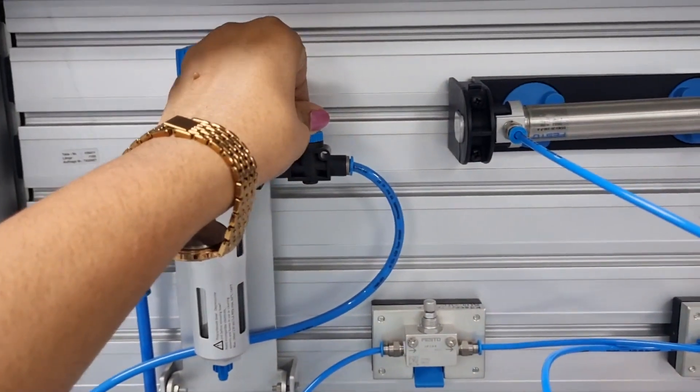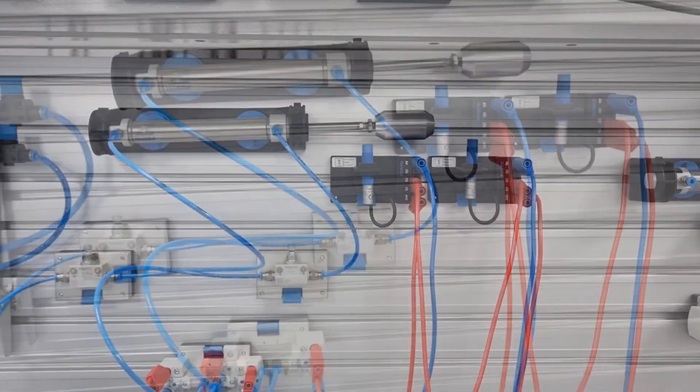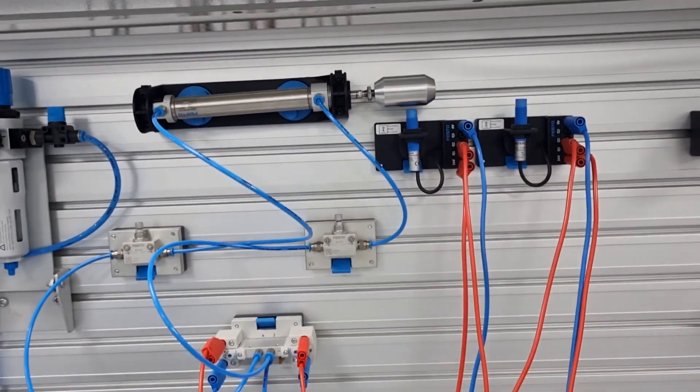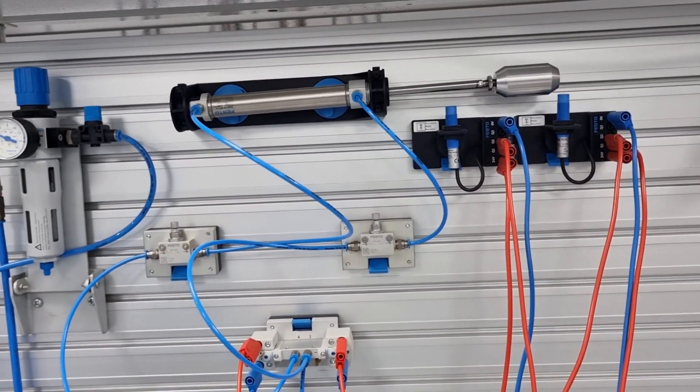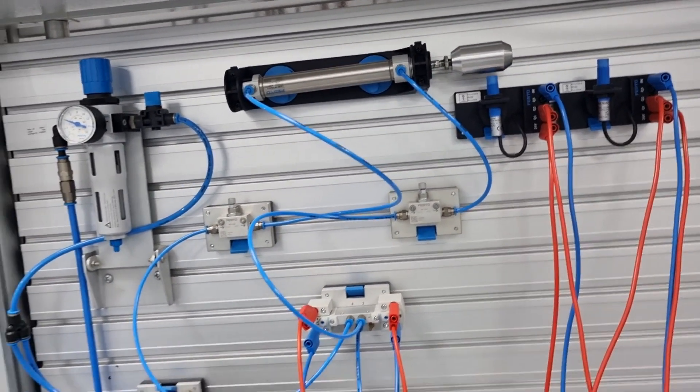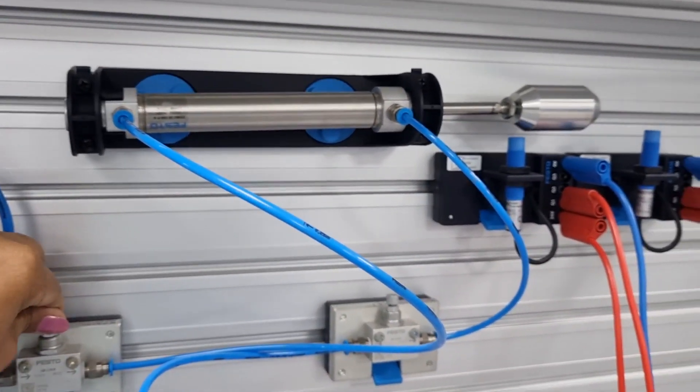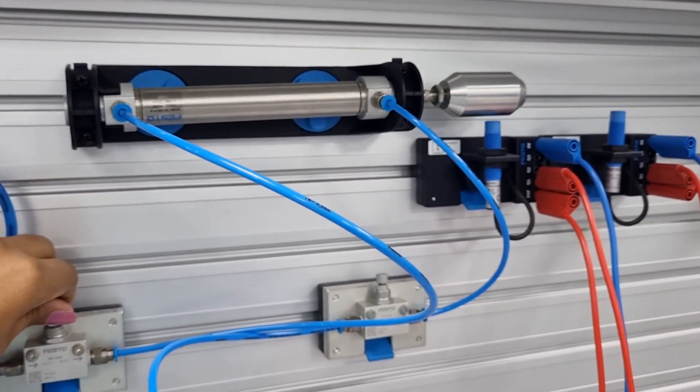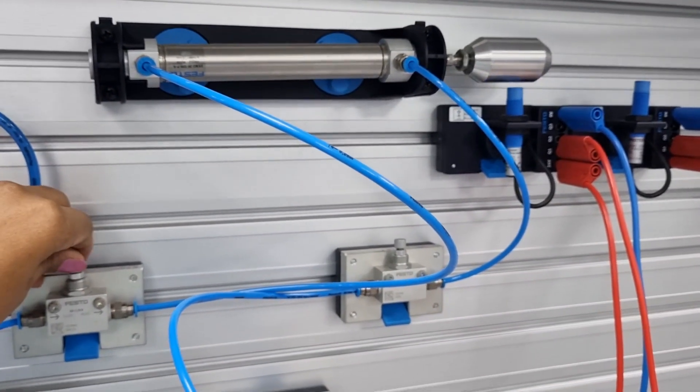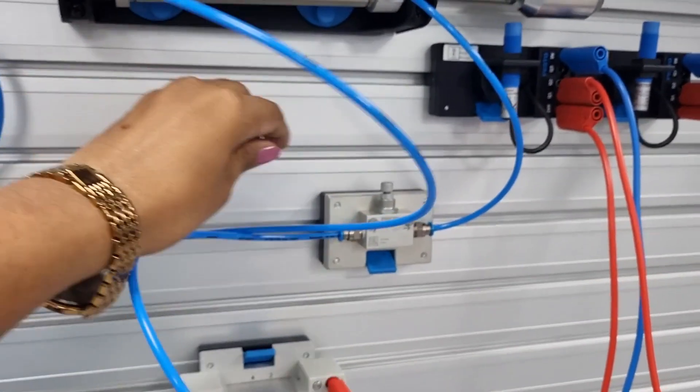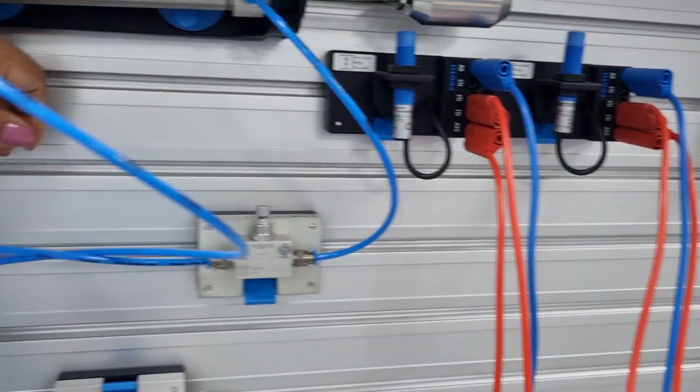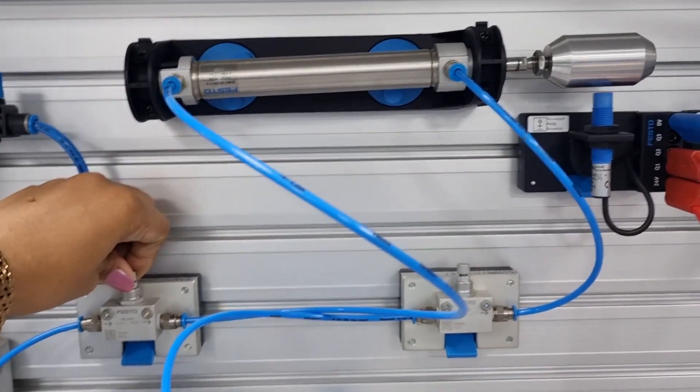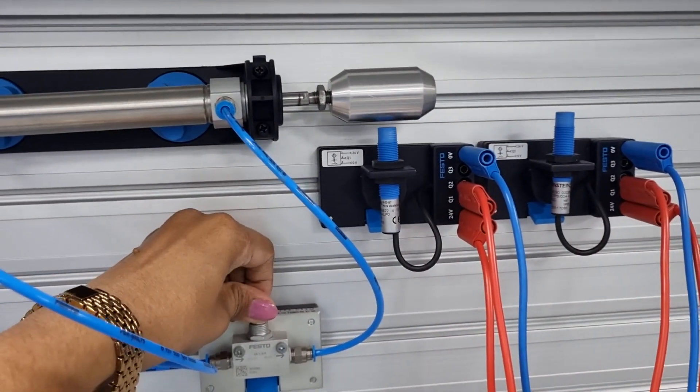You can see the continuous movement of this double acting cylinder. Now it is working fine. The movement is very slow because I have adjusted the flow control valve. If I change this, you can see the extension speed is increased. Now I am adjusting the retraction speed. You can see the retraction speed has increased.